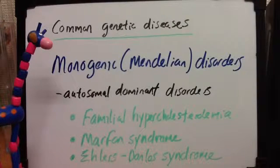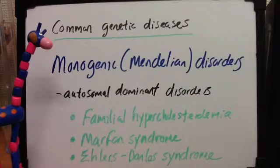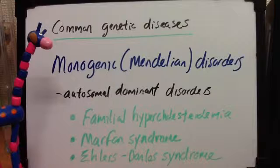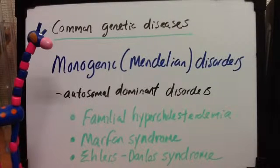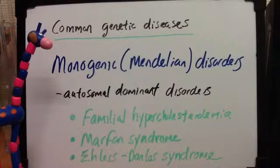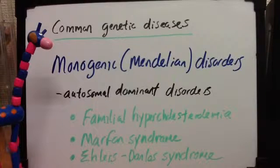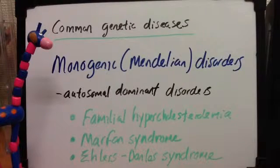Next, Marfan syndrome, discovered by the French pediatrician Marfan in 1896, looking at a young girl with a typical habitus — habitus being the typical shape of the body. This involves an abnormal protein fibrillin, which is secreted by fibroblasts as part of the ECM or extracellular matrix. There is an impairment of the collagenous and elastic tissue with a decreased firmness of connective tissue, meaning stretchy skin — but since we're talking about connective tissue, many organs throughout the body are affected.